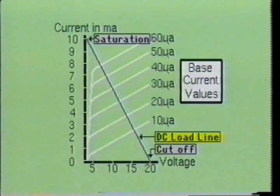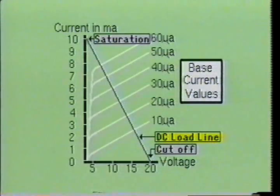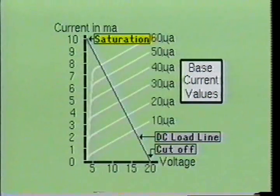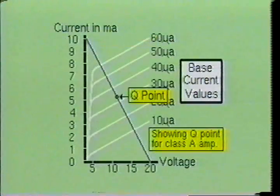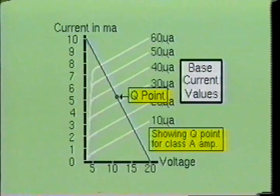By knowing the maximum collector current and the maximum collector-emitter voltage drop, a DC load line can be drawn. The maximum collector current is developed when the transistor is at its saturation point, and the maximum collector-emitter voltage drop occurs when the transistor is at its cutoff point. Typical amplifier operation will usually be somewhere along the DC load line between saturation and cutoff. When no input signal is applied, the amplifier's operating condition will be at a specific point on the DC load line called the quiescent operating point, or simply its Q point.